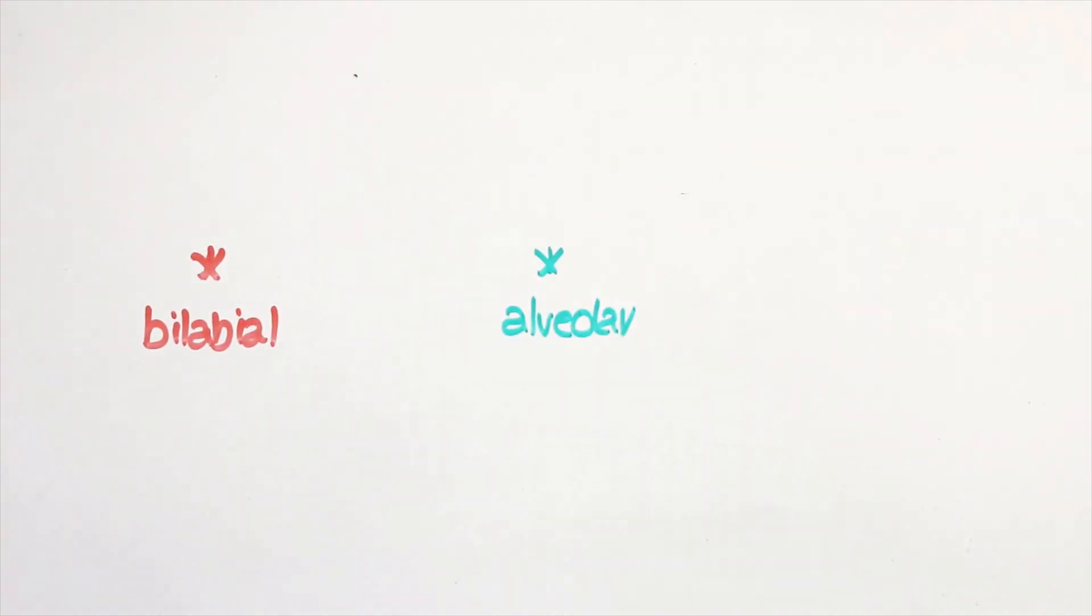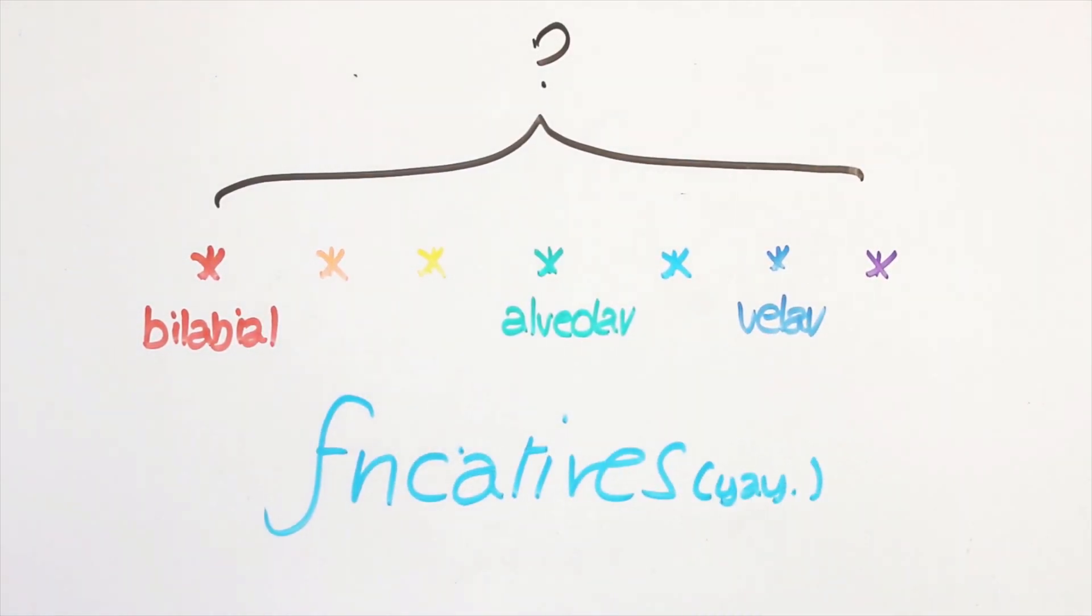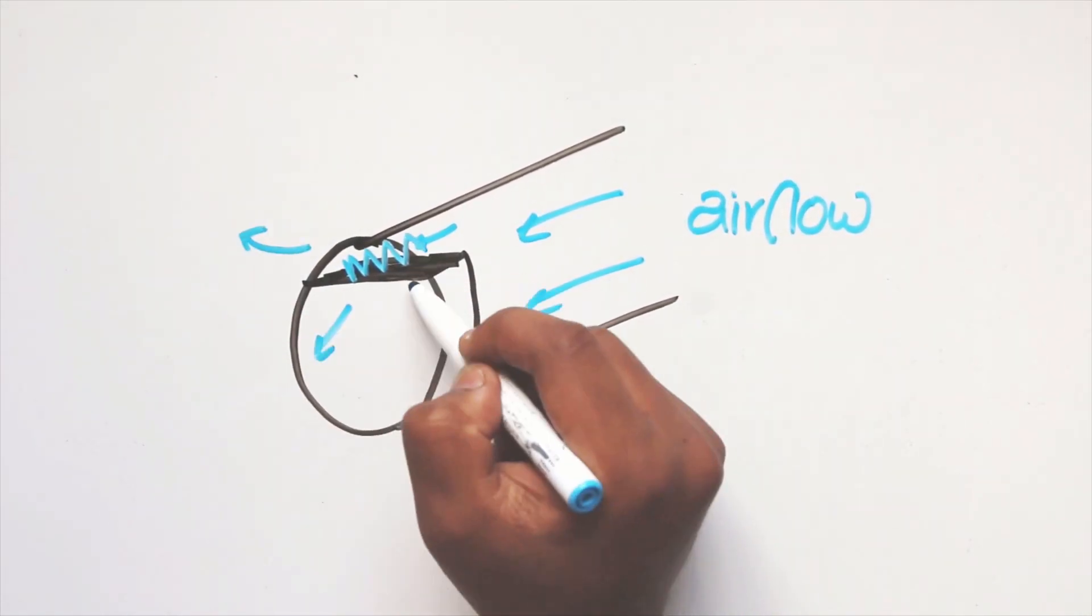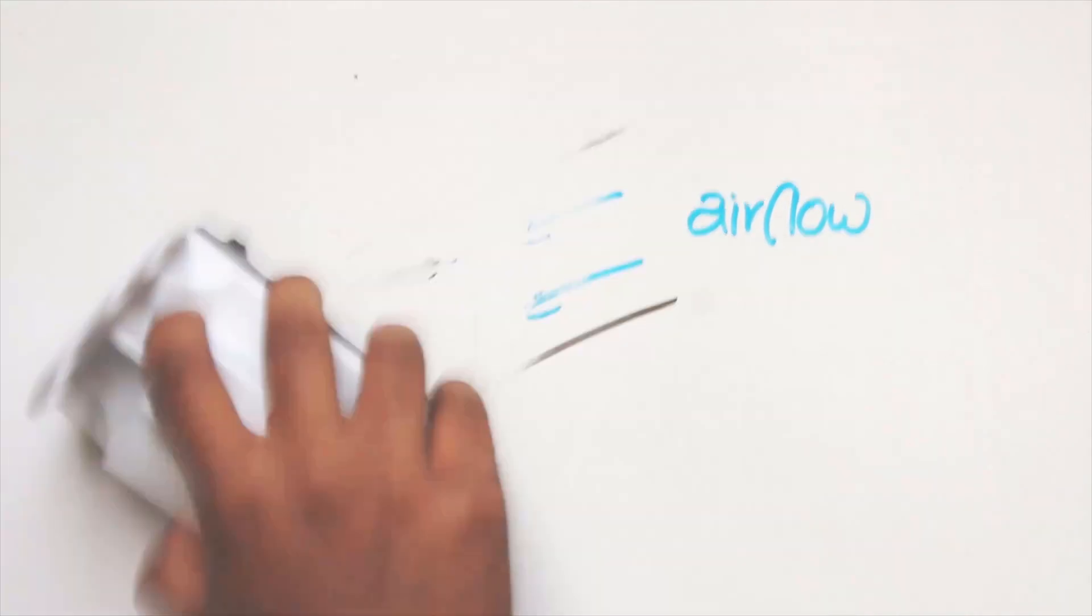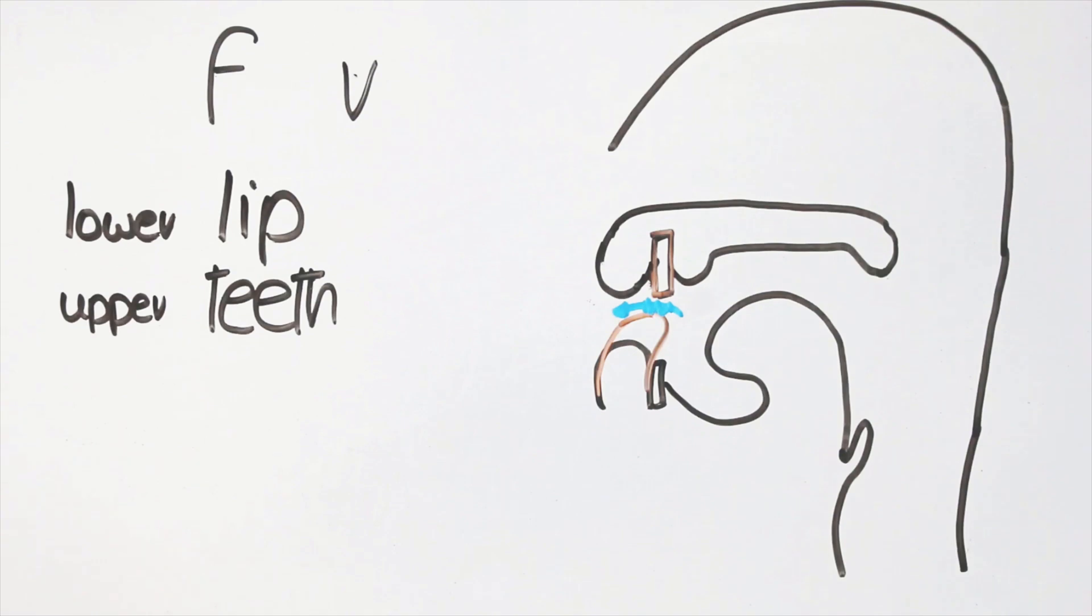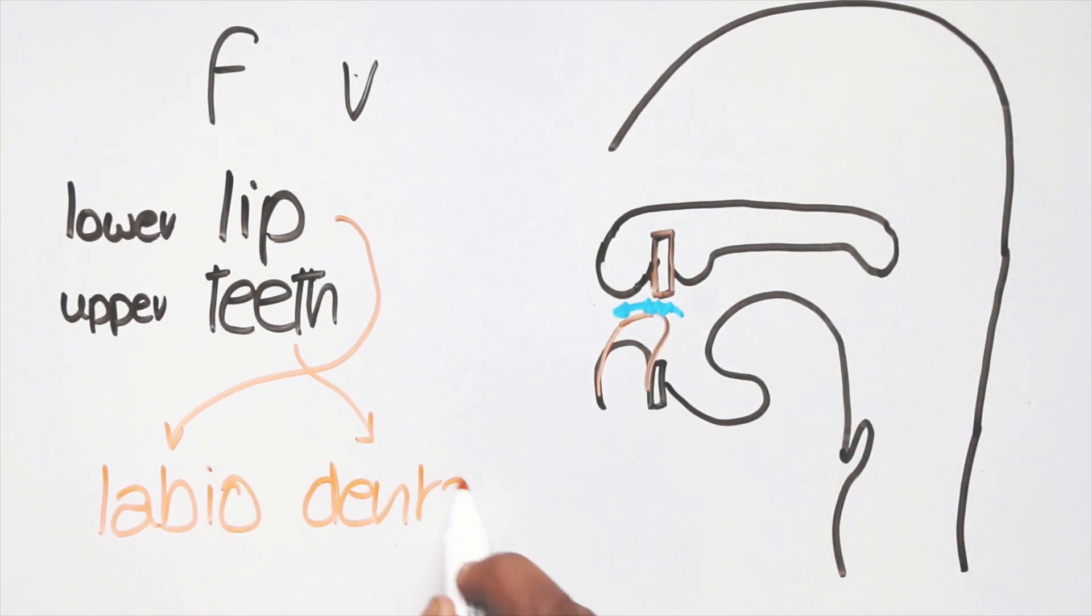But in between bilabial, alveolar and velar, there are even more points of articulation. Let's have a look at them, using fricatives as examples. Remember, fricatives are produced when airflow passes through a tiny aperture formed in the mouth and undergoes friction. So let's look at f and v. Instead of the two lips, the air flows through an aperture between the upper teeth and lower lip. This means they are labiodental.